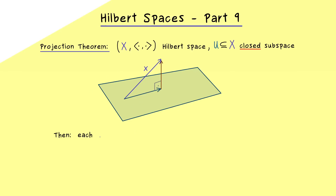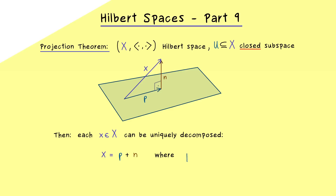The claim of the projection theorem is that this orthogonal projection always exists — it does not matter which element x from the Hilbert space we choose. And most importantly, there is also only one orthogonal projection of x onto u, which means this decomposition is uniquely given. So we can write x as a linear combination of two vectors: the first vector is a vector p in u, and the other one is a vector n in the orthogonal complement.